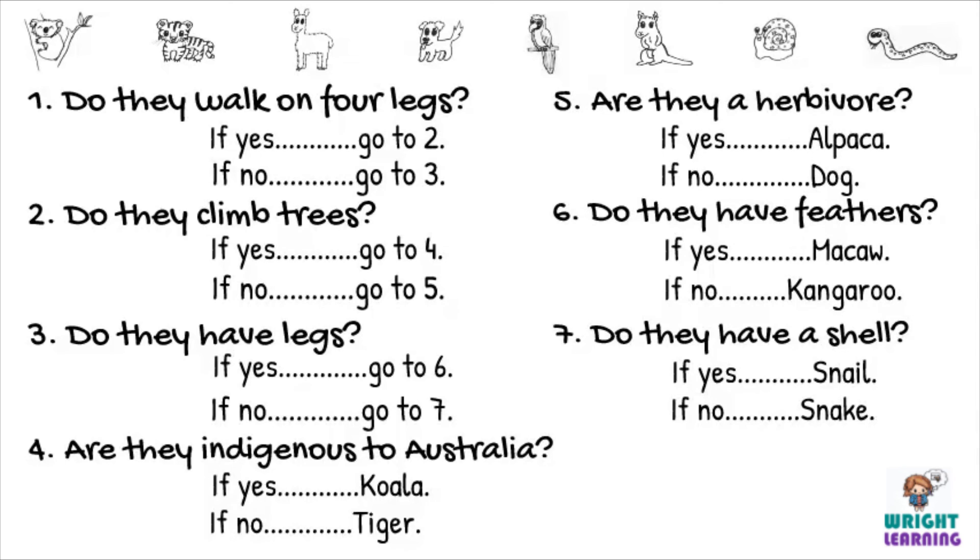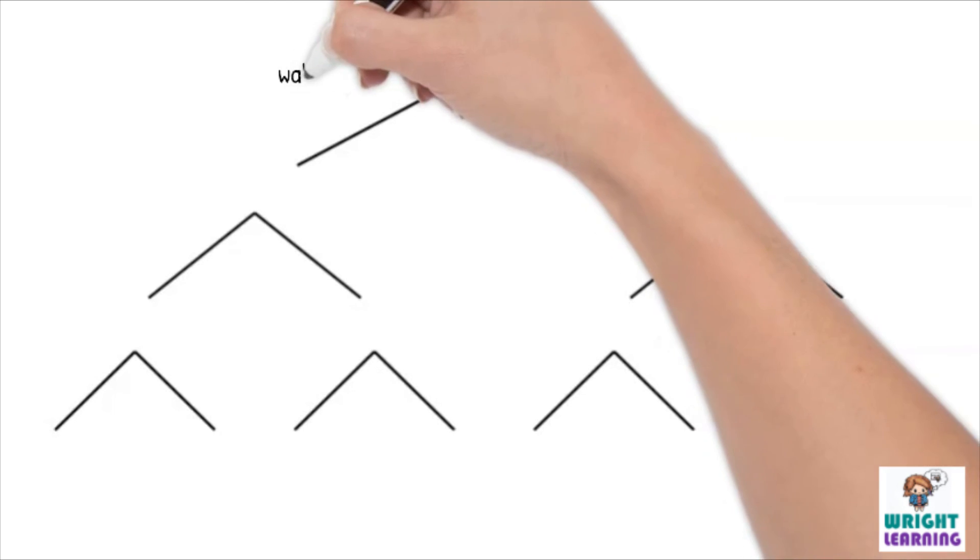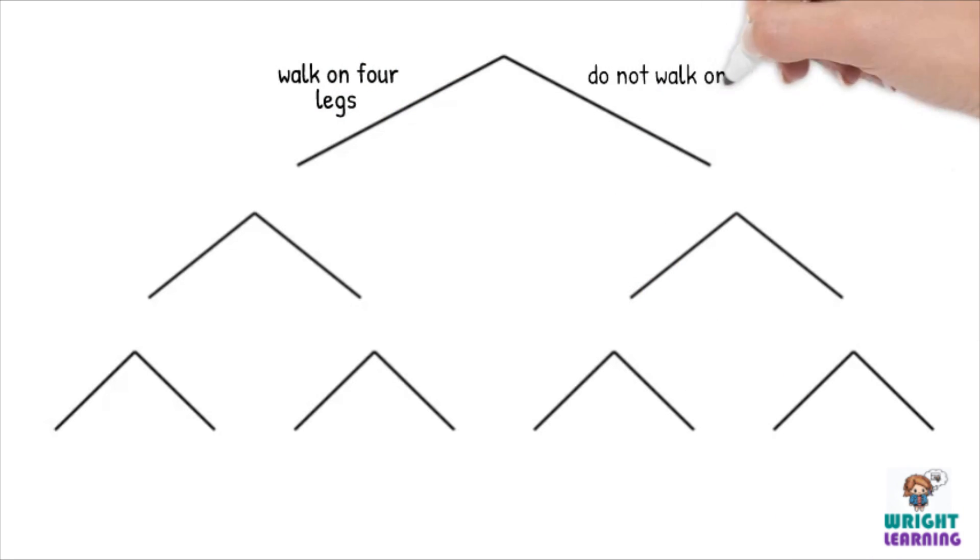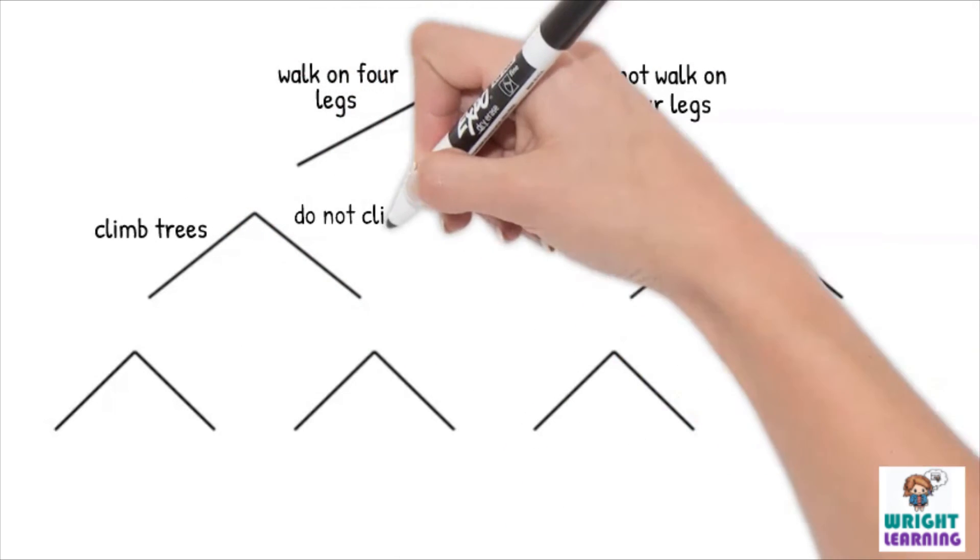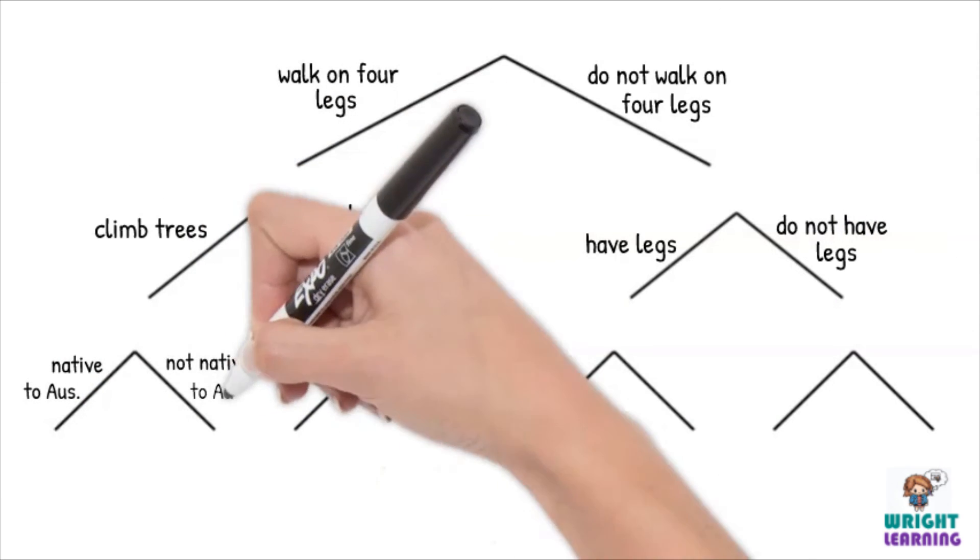Next we'll look at what to do if you're presenting your dichotomous key as a visual representation or a tree diagram. Rather than writing out the whole question this time, we can use things called annotations. Annotations are a written comment on something. Along each of the branches of the tree diagram, we write just enough that you can tell what the question was asking,